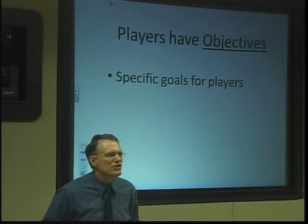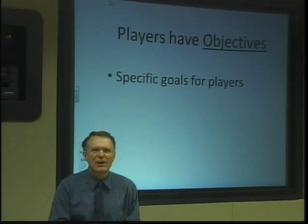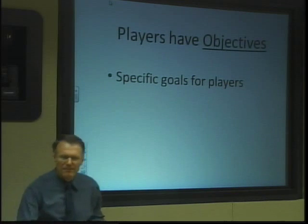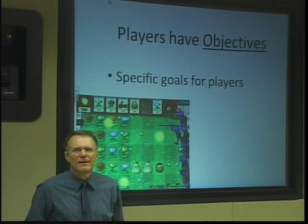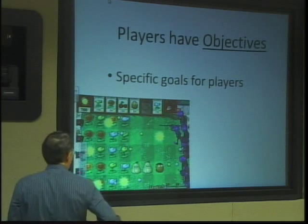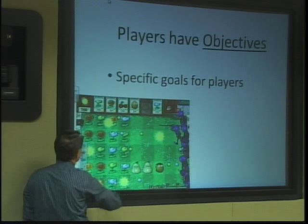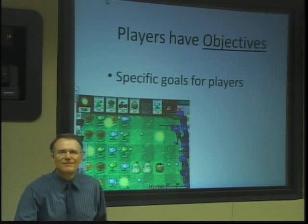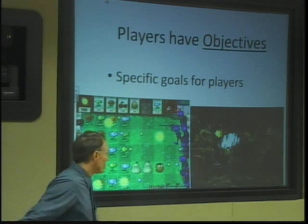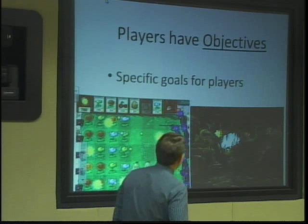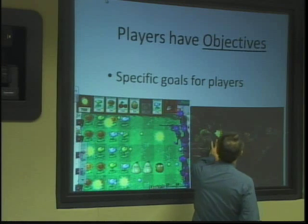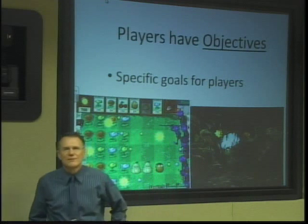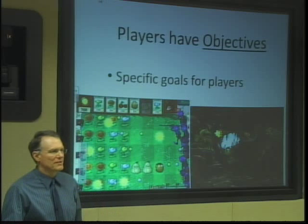Players have objectives — that's why you care about the outcome. There are specific goals the player will have in the game. In Plants vs. Zombies, you have a goal of defending your front porch from the zombies as they march across your front lawn. In Evil Clutches, you have the goal of rescuing your babies for lots of points and shooting demons for fewer points, and your goal is to get as many points as you possibly can.